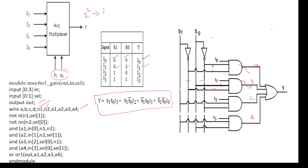In our circuit there are 2 NOT gates. We need to mention them in the code. The NOT gate output is N1 and the input is selection line S1. And N2 is the output with selection line S0 as the input.